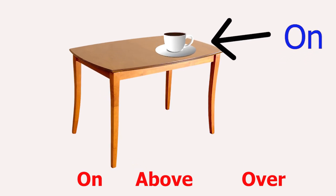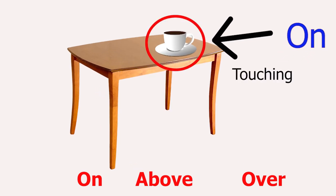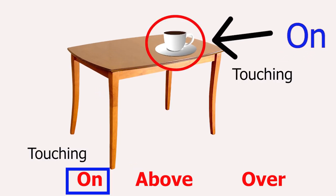If something is on the table and touching the table, use 'on'. Like this calf is on the table, and this calf is touching the table.